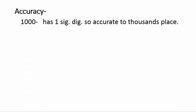Let's check the accuracy of significant digits. For 1000, there is no decimal, so these 3 zeros are not significant — only the digit 1 is significant, giving 1 significant digit. So this number is accurate up to the thousands place. The hundreds, tens, and ones places are not accurate.